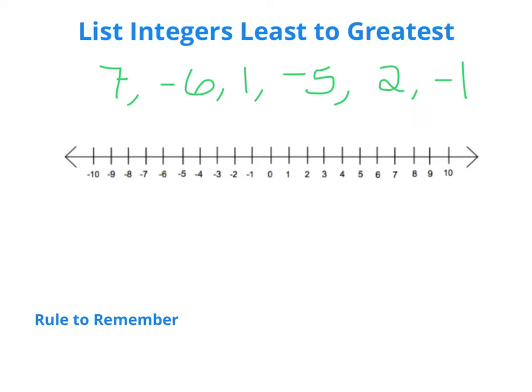Alright, the next thing that we're going to do with integers is we're going to plot them on a number line. So we have negative numbers and positive numbers, and then use the number line to list these numbers least to greatest. So, let's see, I need to plot positive 7, so I'm just going to put a dot right at 7, cross it off because I used it. Negative 6 over here, positive 1, negative 5, 2, and negative 1. So, I plotted all my numbers on my number line, and now to list them least to greatest, you're going to list them left to right.